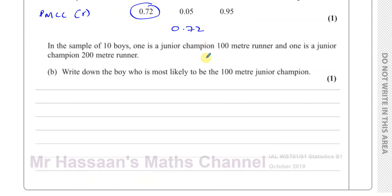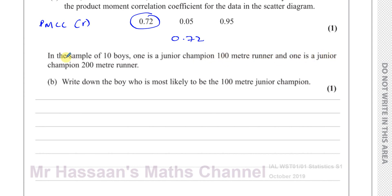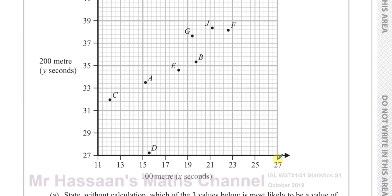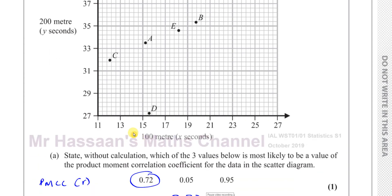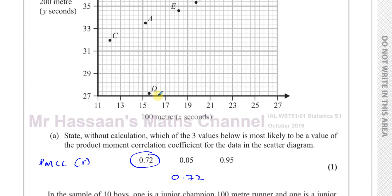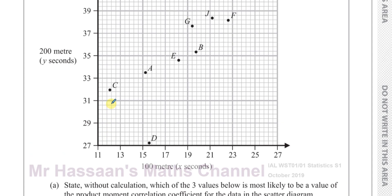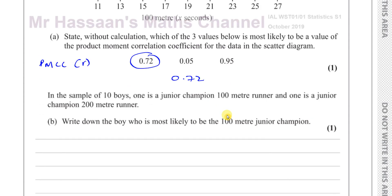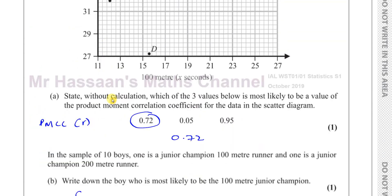Then it says, in the sample of 10 boys, one is a junior champion 100 meter runner and one is a junior champion 200 meter runner. Write down the boy who is most likely to be the 100 meter junior champion. Now be very careful here. The higher the value doesn't mean the better in this case. The lower the value means the better. Why? Because this is the time taken to run 100 meters. The one that runs with less time is the faster one, the one that wins the race. So we can see clearly here that for the 100 meter junior race, the one with the least time is C. His time is less than everyone else for the 100 meters race. So we can say that the junior champion for the 100 meters is C, that's boy C. We can see that very clearly. Very simple question so far.